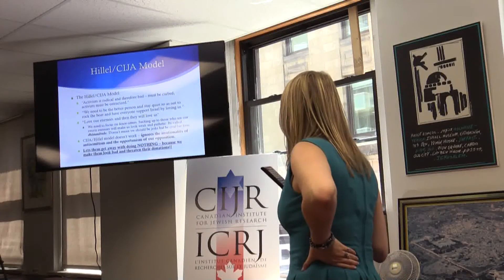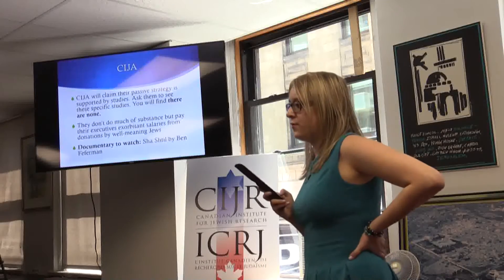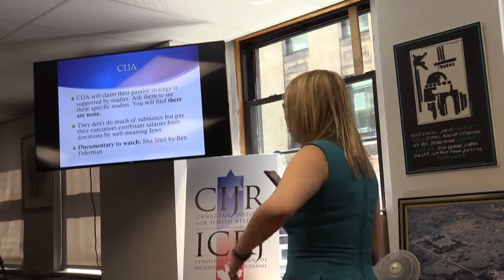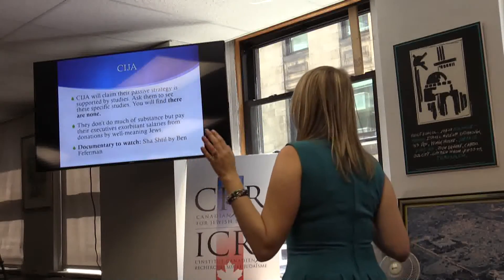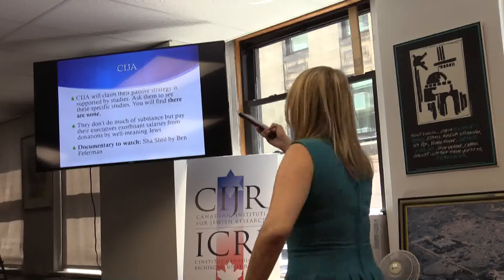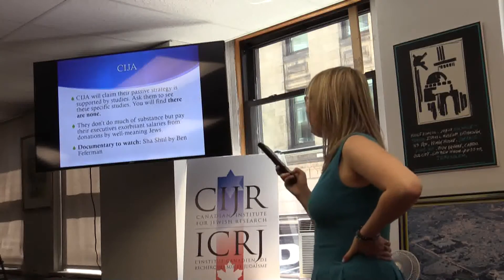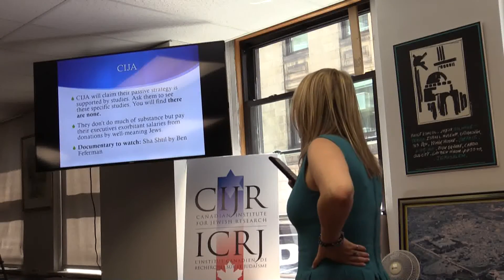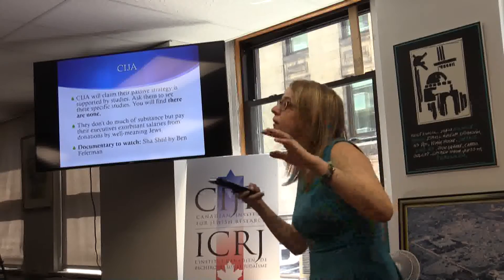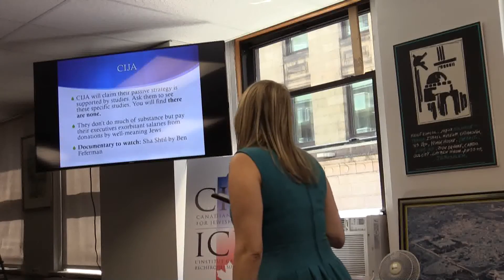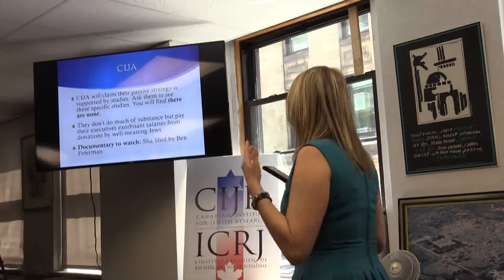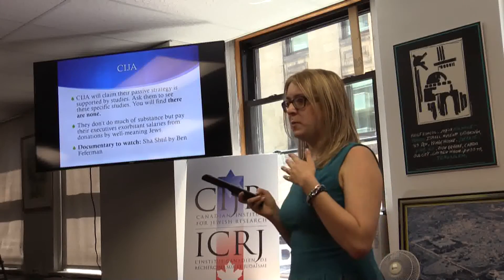Why does Hillel know their strategy doesn't work but keep doing it? It lets them get away with doing nothing, because activists like us make them look bad and threaten their donations. CIJA — the Centre for Israel and Jewish Affairs in Canada — has a strategy based on passiveness: look like the normal ones while the other side looks crazy. But students don't have the discernment for that, and students are the future. CIJA will claim their passive strategy is supported by studies, but when you ask which specific studies, there are none. They don't do much of substance — they pay executives exorbitant salaries from the donations of well-meaning Jews. So donate to people who actually do things, like CIJR.